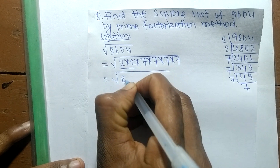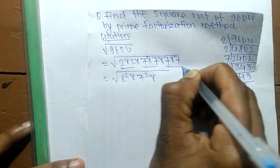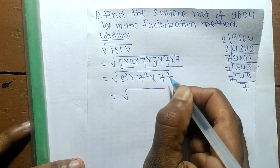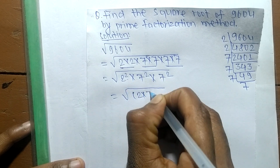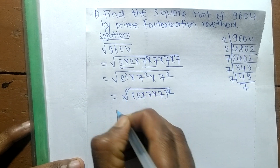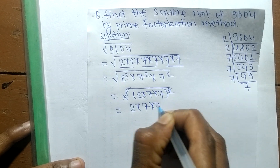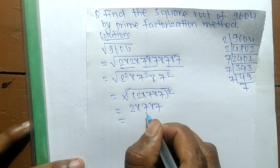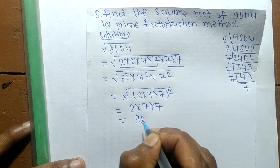So 2 × 2 is 2², 7 × 7 is 7², and again 7 × 7 is 7². A square is present in all, so we take it as common and write (2 × 7 × 7)². The square and square root cancel, leaving 2 × 7 × 7, which equals 2 times 7 = 14, and 14 times 7 = 98.